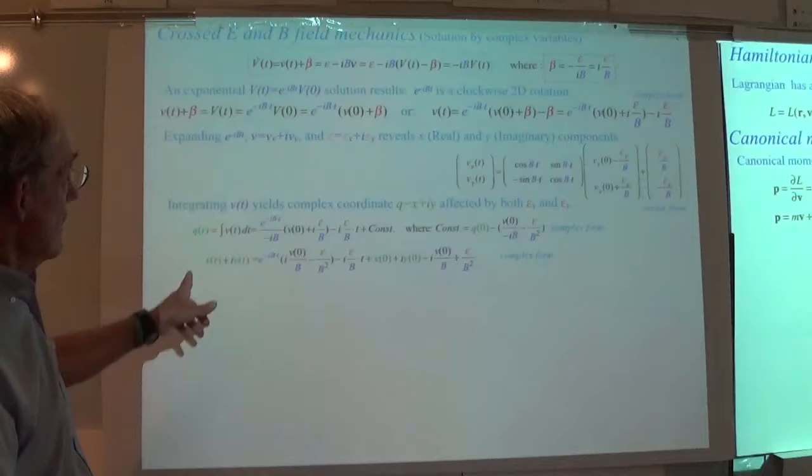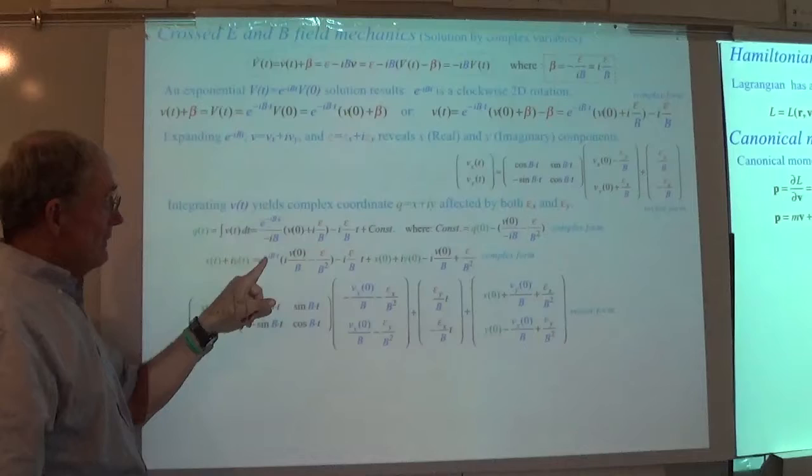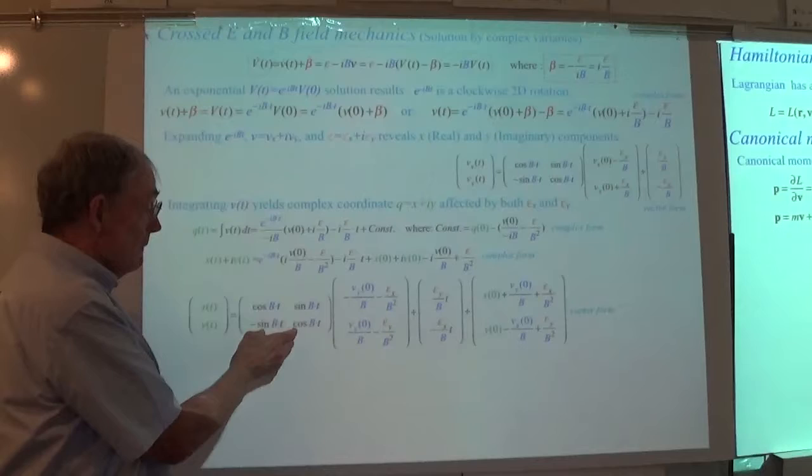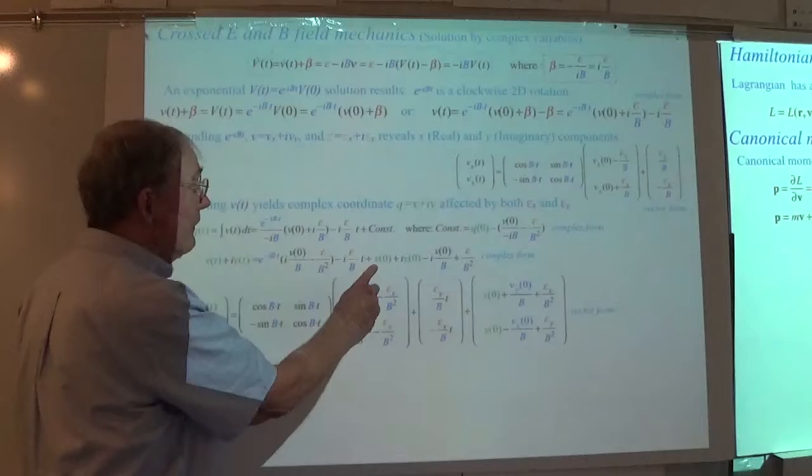This is what we're looking at for the actual position. What does that mean? Here's the matrix expression: a rotation with a minus sign. To rotate all of this, plus the extra terms here involving E/B. Then initial velocity times time plus initial position — that's the vector form.